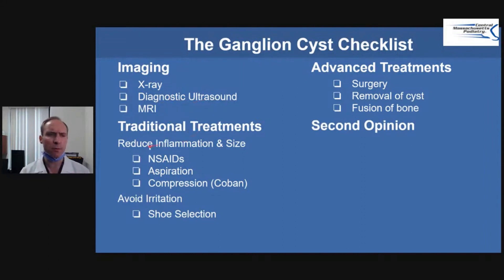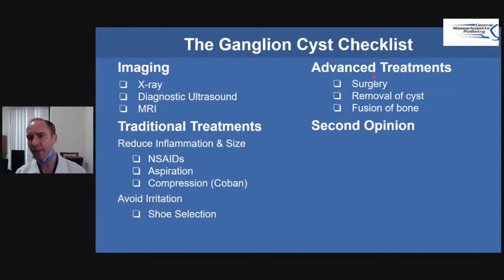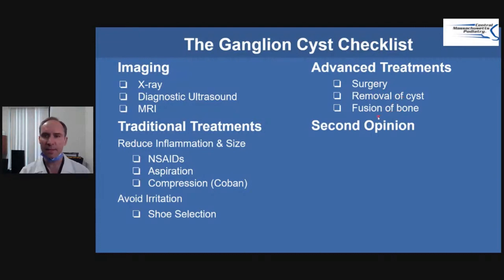What are the traditional treatments? You want to reduce the inflammation and size. Anti-inflammatories can help with inflammation, but they won't reduce the size. Aspiration — pulling out the liquid with a needle — and then compression. That's key. You can't just pull it out and leave it; you have to put compression on it for a couple of weeks. Avoid shoe irritation. Advanced treatments include surgery to remove the cyst, sometimes fusing the bone as I mentioned, and getting a second opinion if things aren't improving.